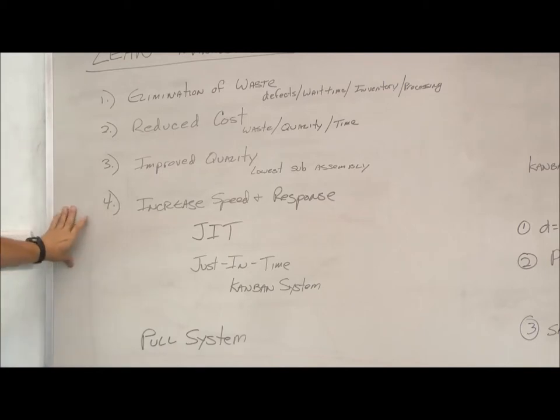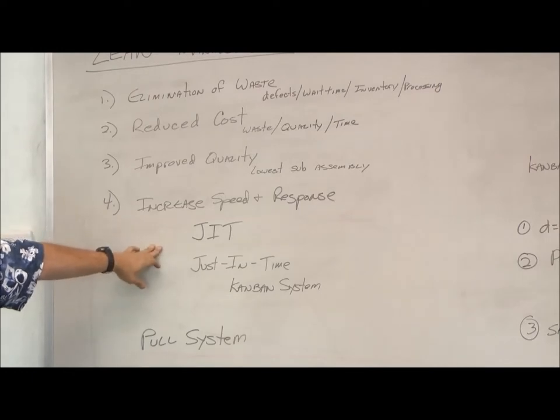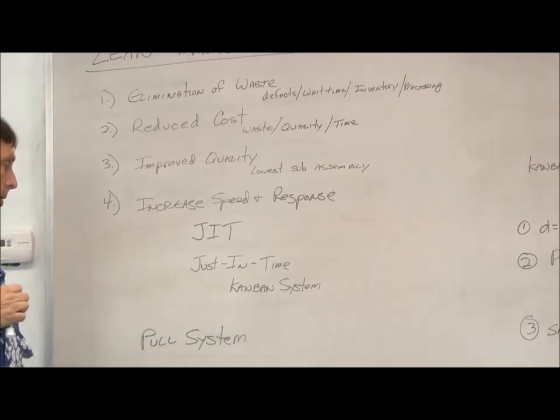Last thing we're going to look at is speed and response. One thing a lot of people use is just-in-time, just-in-time delivery, which is typically done with a Kanban system, which is a pull system. So the person at the end that needs the product or the subassembly just pulls it from the system when they need it, versus a typical manufacturing process, which is push, where everything's available before they need it.